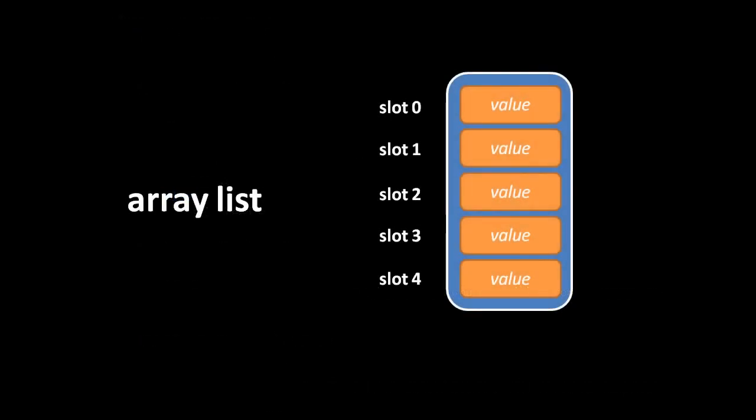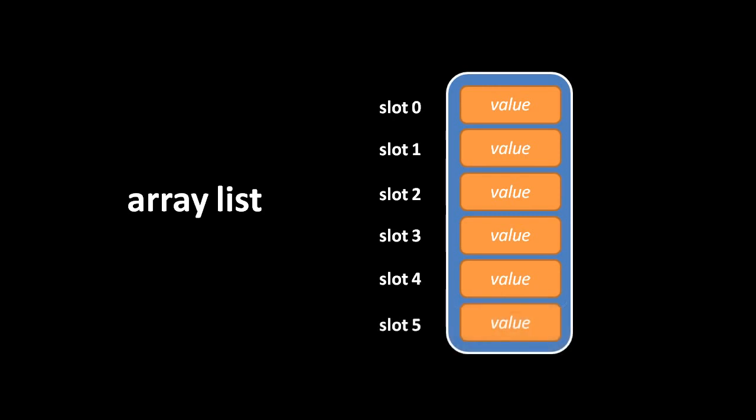As the name implies, an array list is a list stored in the form of an array. If at any point our list exceeds the length of the current array, what we do is create a new larger array and copy over all the existing values.